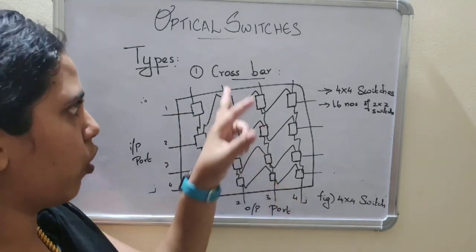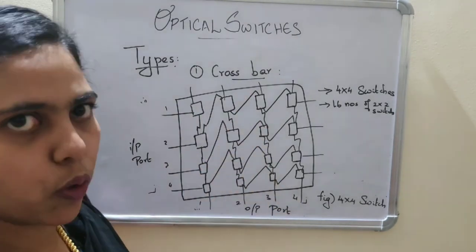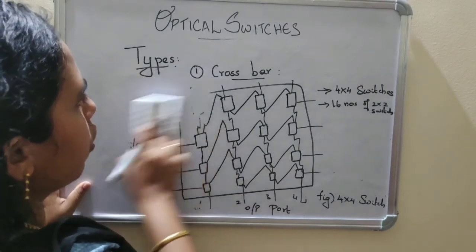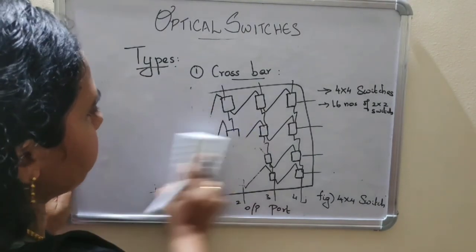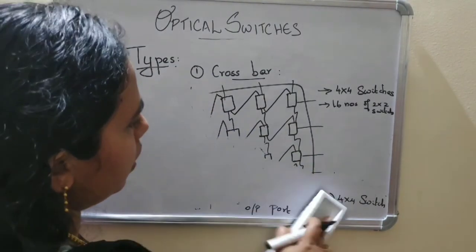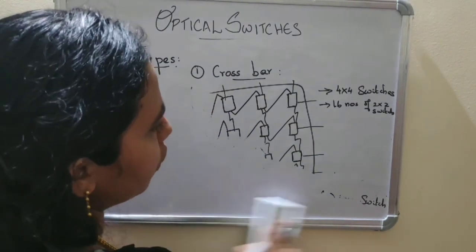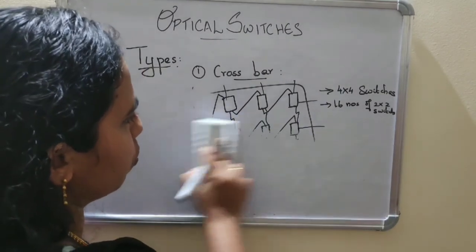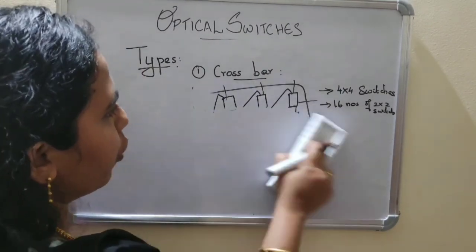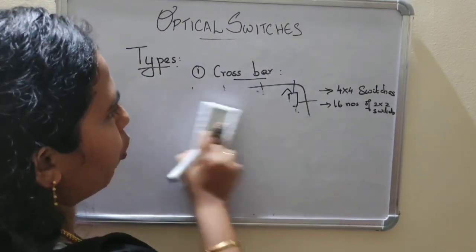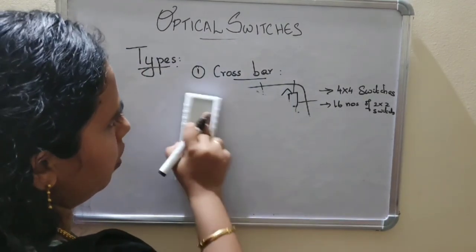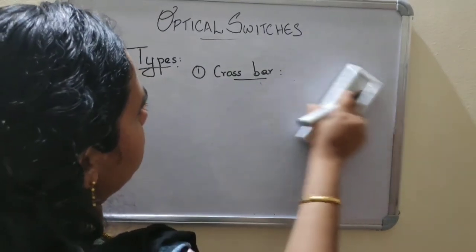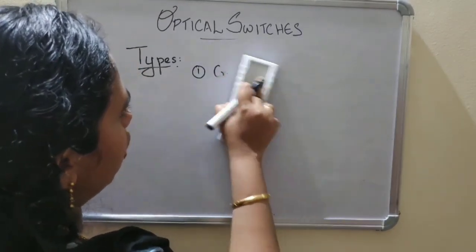That is the final result in Crossbar. In Crossbar, 4-cross-4 switches are used with 4 input ports and 4 output ports. Second, we are going to discuss about Closs.